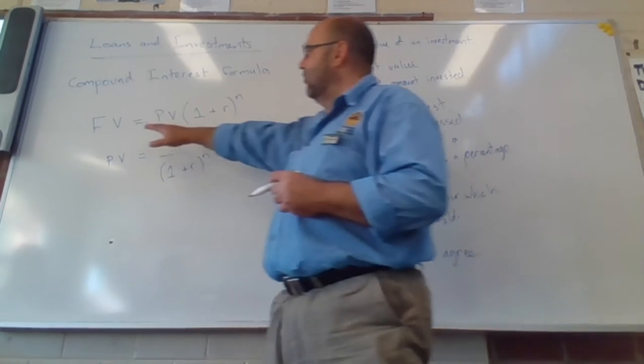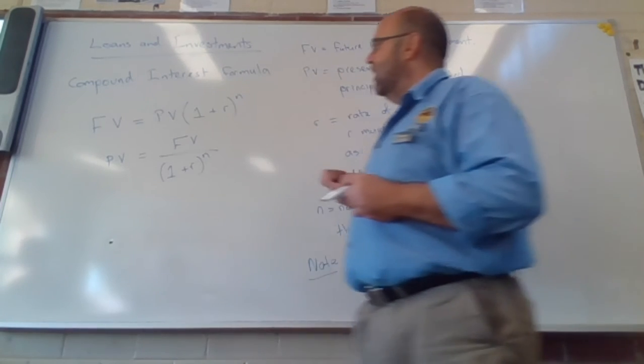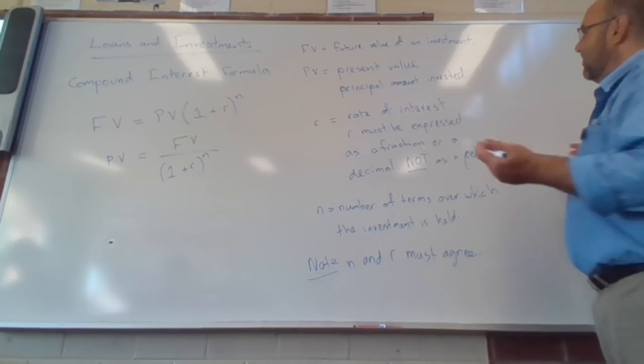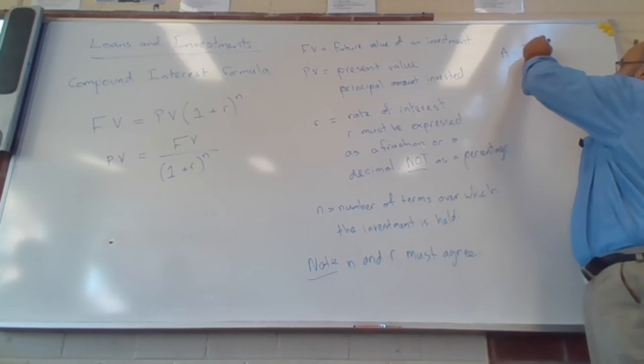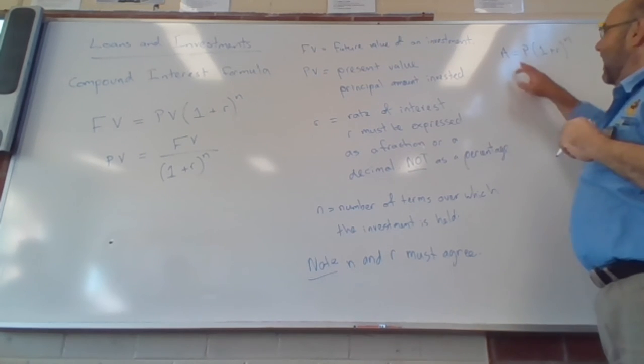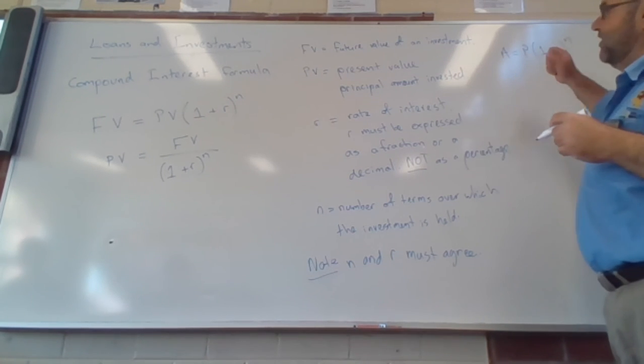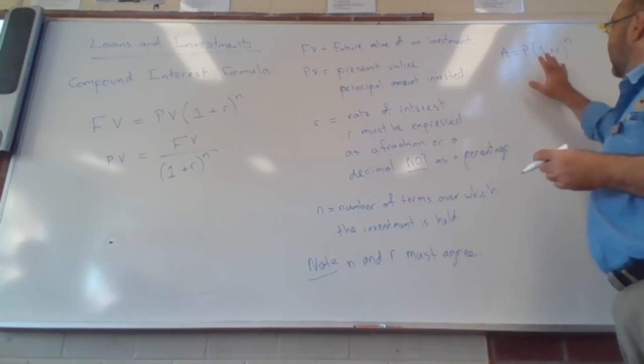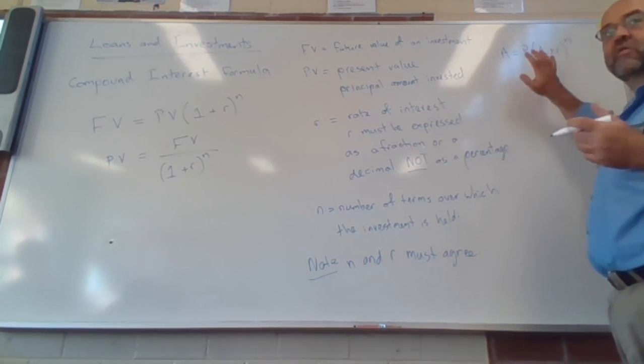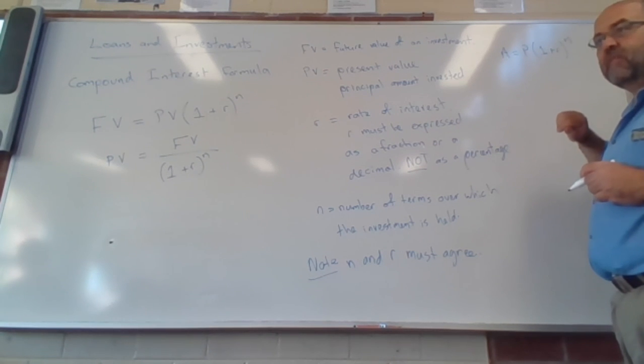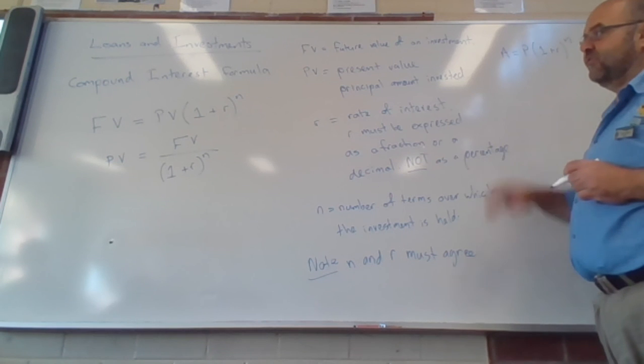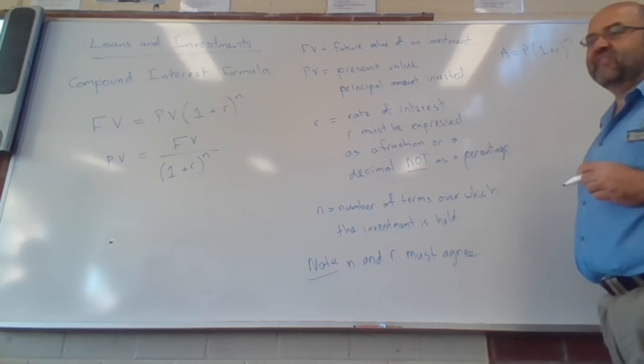Another way that people write this formula, the exact same formula, I just use different symbols, is sometimes they write A equals P times one plus R to the N. A is your future value. P is your principal investment or your present value. It works exactly the same way. Don't panic if you see this written in some textbooks or some older exam papers. That's exactly the same formula, just using slightly different names of some of the terms.